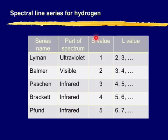So when series number S is equal to 1, you get ultraviolet series. And then when S is equal to 2, you get visible. And these three are infrared.